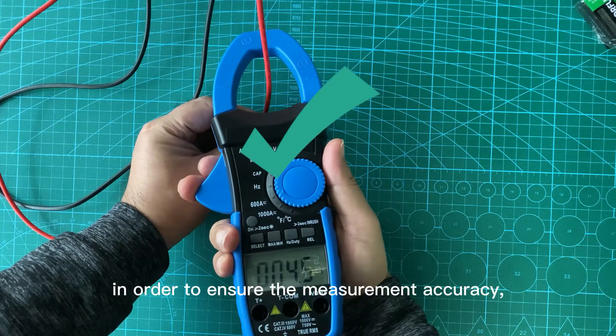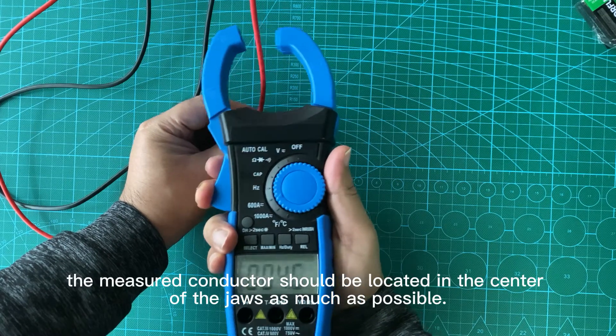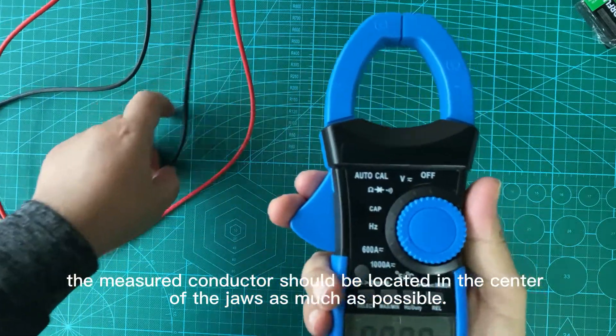To ensure measurement accuracy, the measured conductor should be located in the center of the jaws as much as possible.